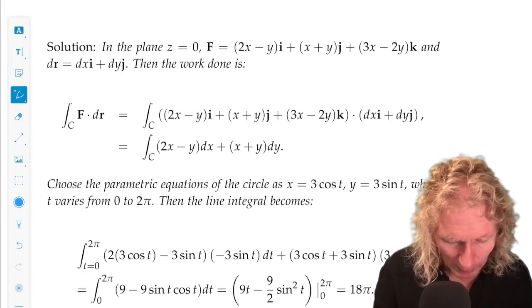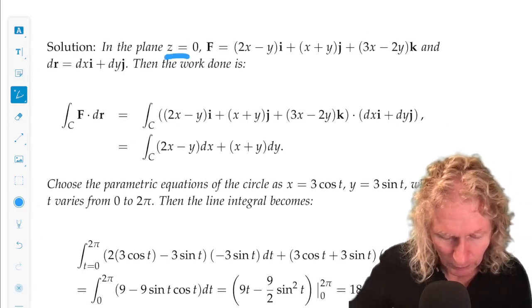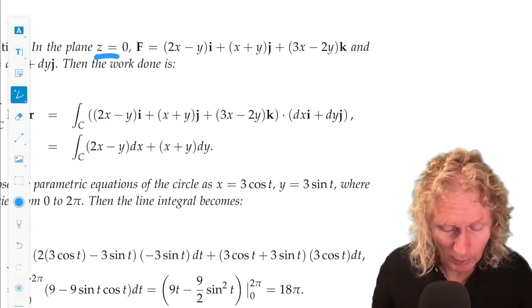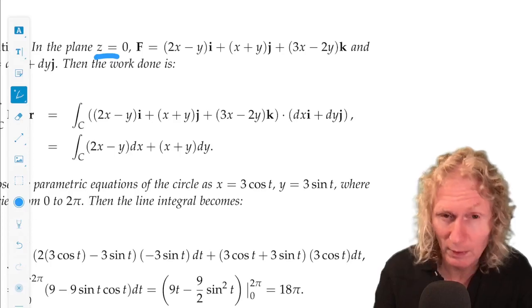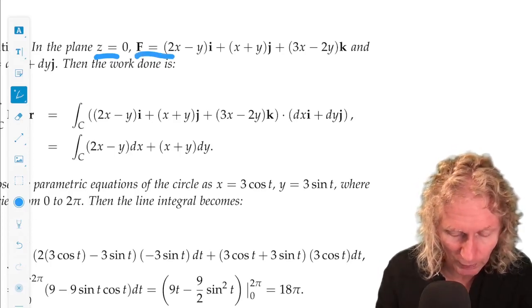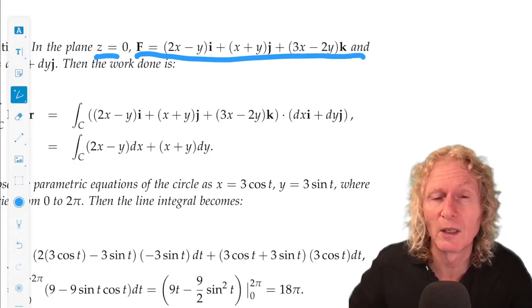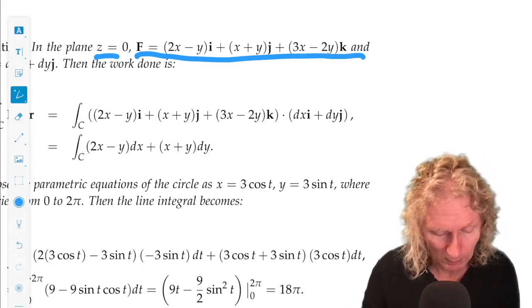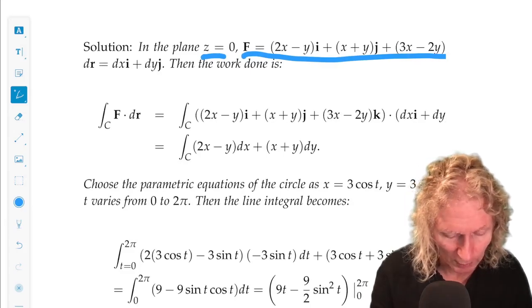The xy plane has z equals zero, so the force in the xy plane, we're given the general force field, but we have to set z equals zero, but it still has a component in the k direction.